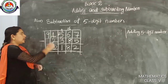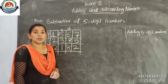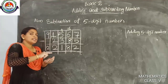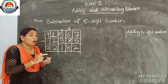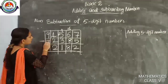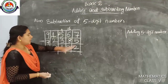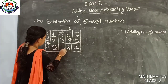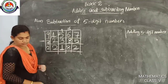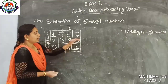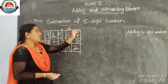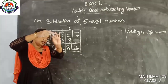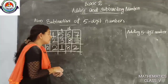Which number subtracted from 9 gives 2? Counting from 2 upward: 3, 4, 5, 6, 7, 8, 9 — that is 7 fingers, so the missing digit is 7. The other blank: which number subtracted from 7 gives 2? Counting from 2 upward: 3, 4, 5, 6, 7 — that is 5 fingers, so the missing digit is 5.